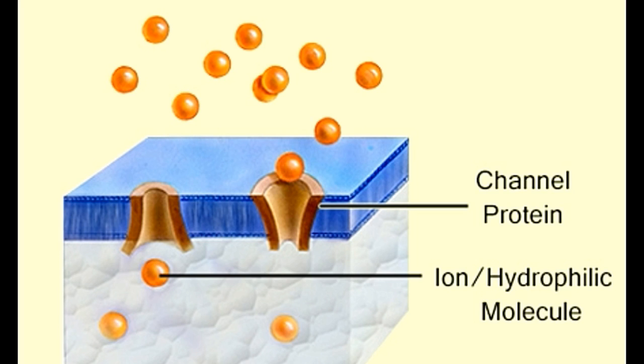Ligand gated channels: nicotinic acetylcholine receptor channel is usually found in neuromuscular junctions. When the nAChR channel binds to the neurotransmitter, acetylcholine ligand, the closed channels open and allow the influx of Na+ ions, thus helping in the contraction of muscles.